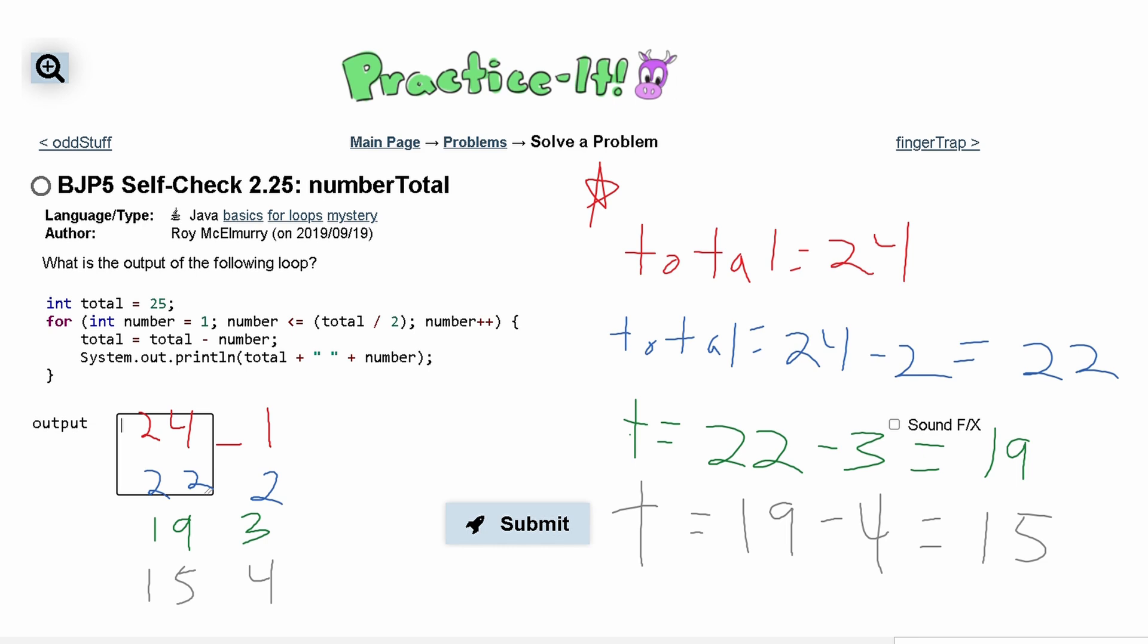Next we can check if we're still going to be in our loop. 15 divided by 2 is going to be 7 and our number is 5 so we are still good. We're going to say t equals 15 minus 5 because our number is now 5. And that's going to give us 10.